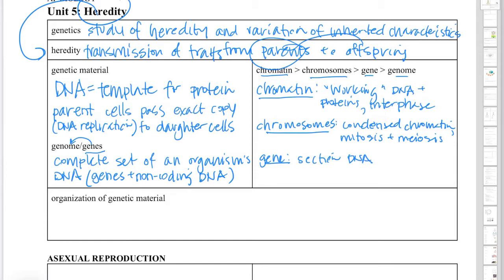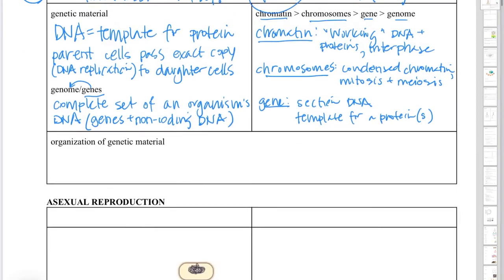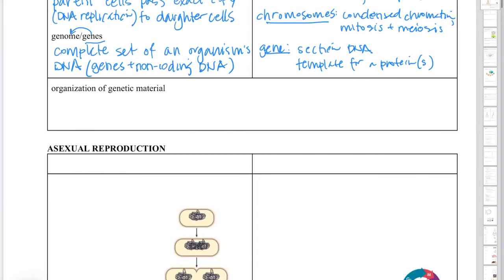The term gene specifically refers to a section of the DNA. If we think of the DNA as a sentence, the gene is a word. It's specifically a template for a protein, and actually can be the template for multiple proteins. We'll talk about how that works.